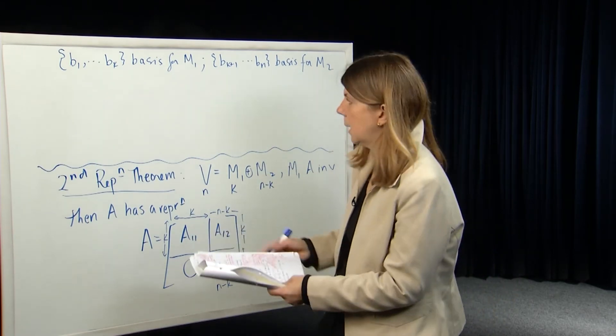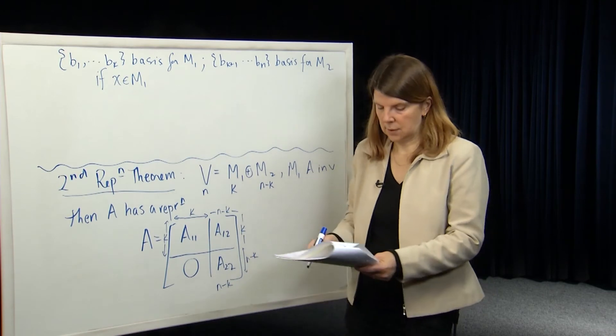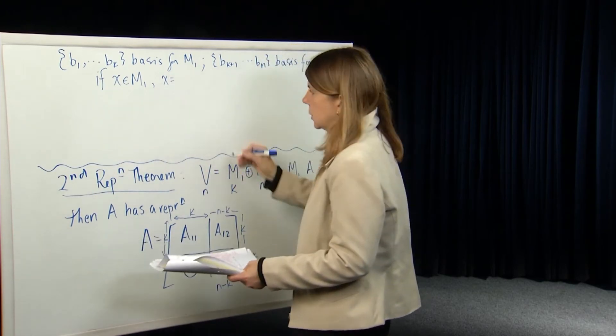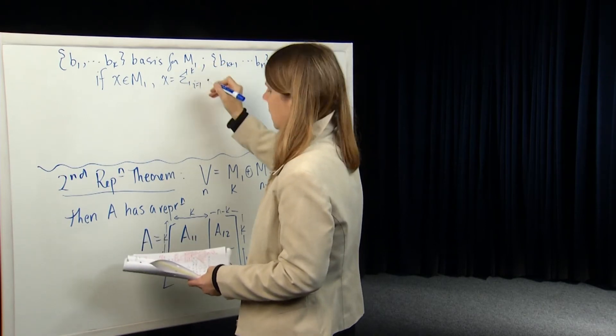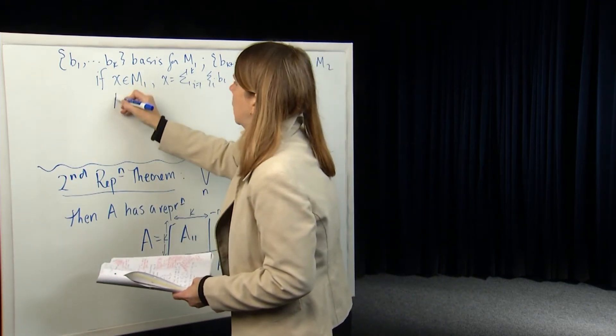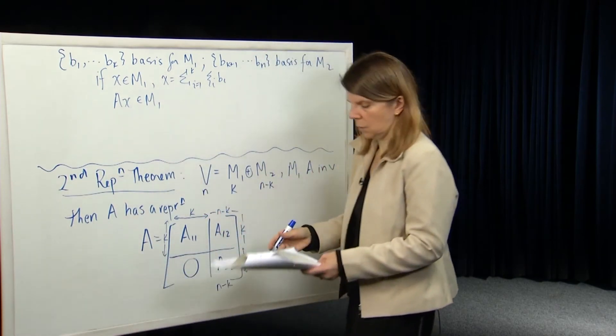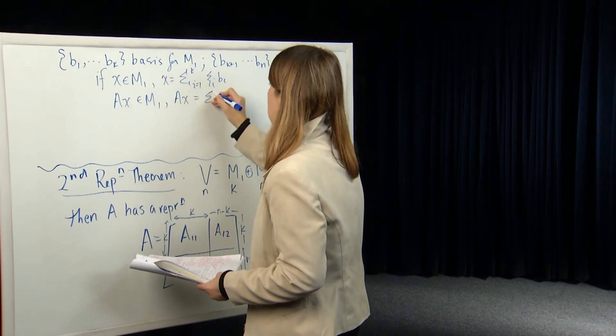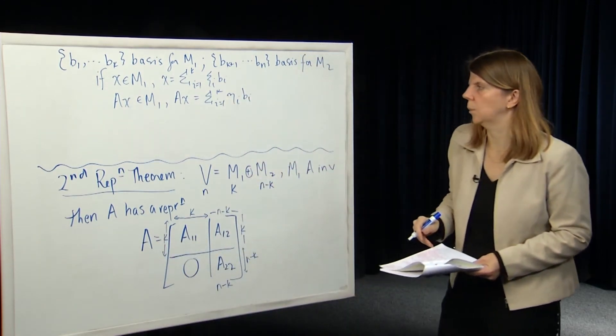So now let's see what happens. If we have a vector X in M1, then M1 is an A-invariant subspace. Well, first of all, we know that we can write out X as a linear combination of the basis elements in M1. So let's write it as the summation from I equals 1 up to K of xi BI. And since AX also belongs in M1 because M1 is A-invariant, then AX can be written as a linear combination of basis vectors in M1.